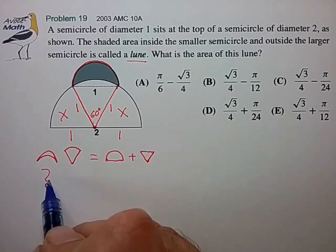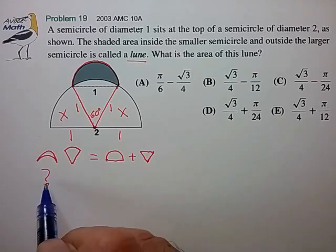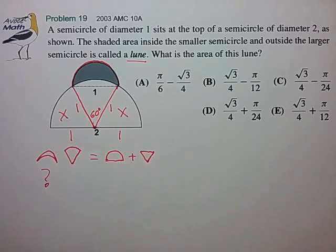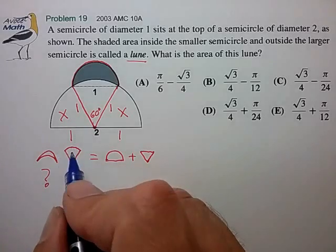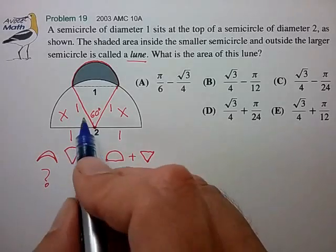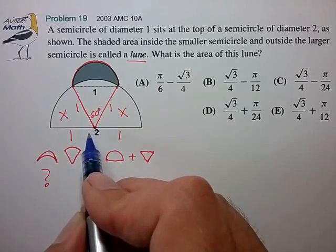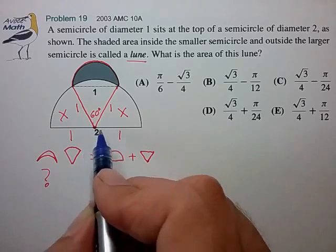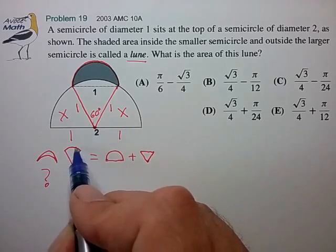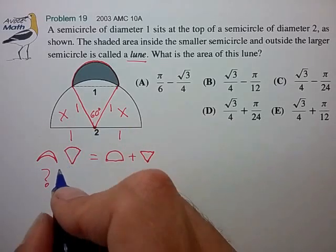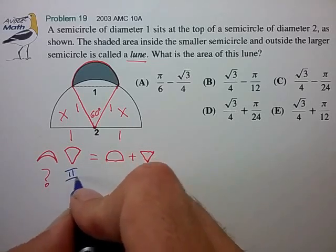And that will allow us to derive and compute the area of the lune. So if we look at this sector, we see that's one-sixth of a circle, 60 degrees being one-sixth of a circle of radius one. So the area of this little pizza pie section is pi over six.